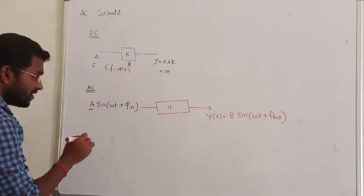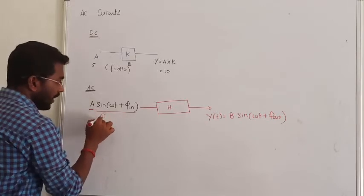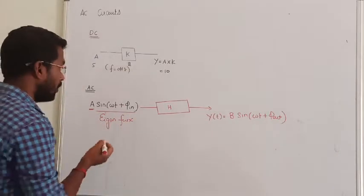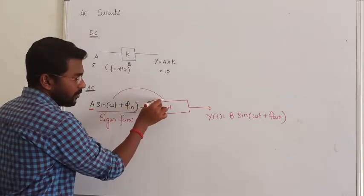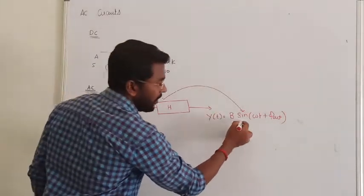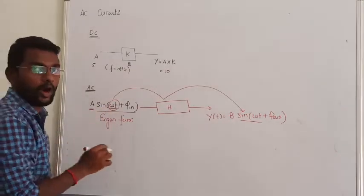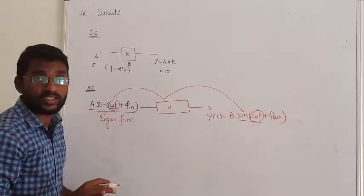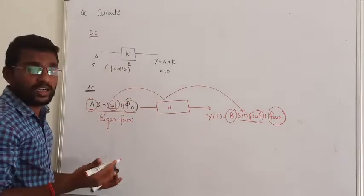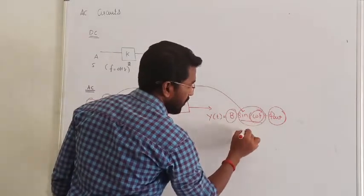So what is the conclusion? The AC signal, if you observe, is a sinusoidal signal — this is an eigen function. Why is it called an eigen function? An eigen function means one signal is passed through the input system and the output of the signal exists without changing its frequency. What is the frequency of the input? Omega. What is the frequency of the output? Same omega. There are no changes. But the phase angle and magnitude will be different — that is one change.